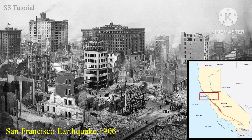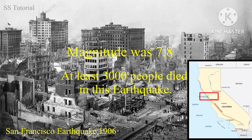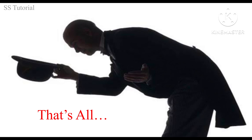In the year 1906, the San Francisco earthquake happened on the San Andreas Fault. Its magnitude was 7.8 and at least 3,000 people died in that earthquake.